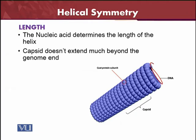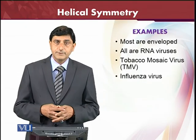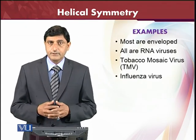The length of the nucleic acid determines the length of the helix. The more the length of the nucleic acid, the more will be the length of the helix and of the capsid. The capsid does not extend much beyond the genome end. If the genome is smaller, the capsid will also be smaller; if the genome is bigger, the capsid will also be bigger. In conclusion, the capsid length is dependent on the genome.